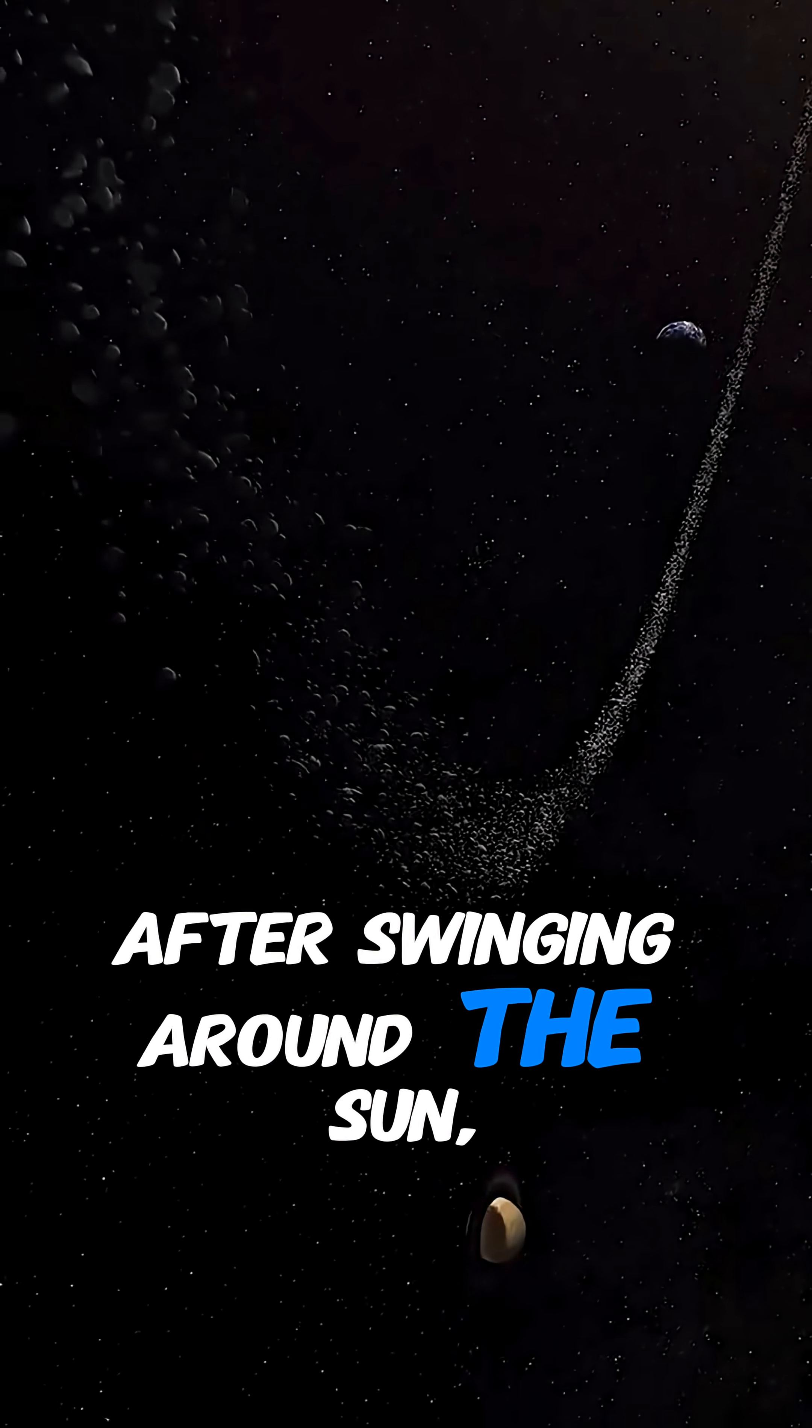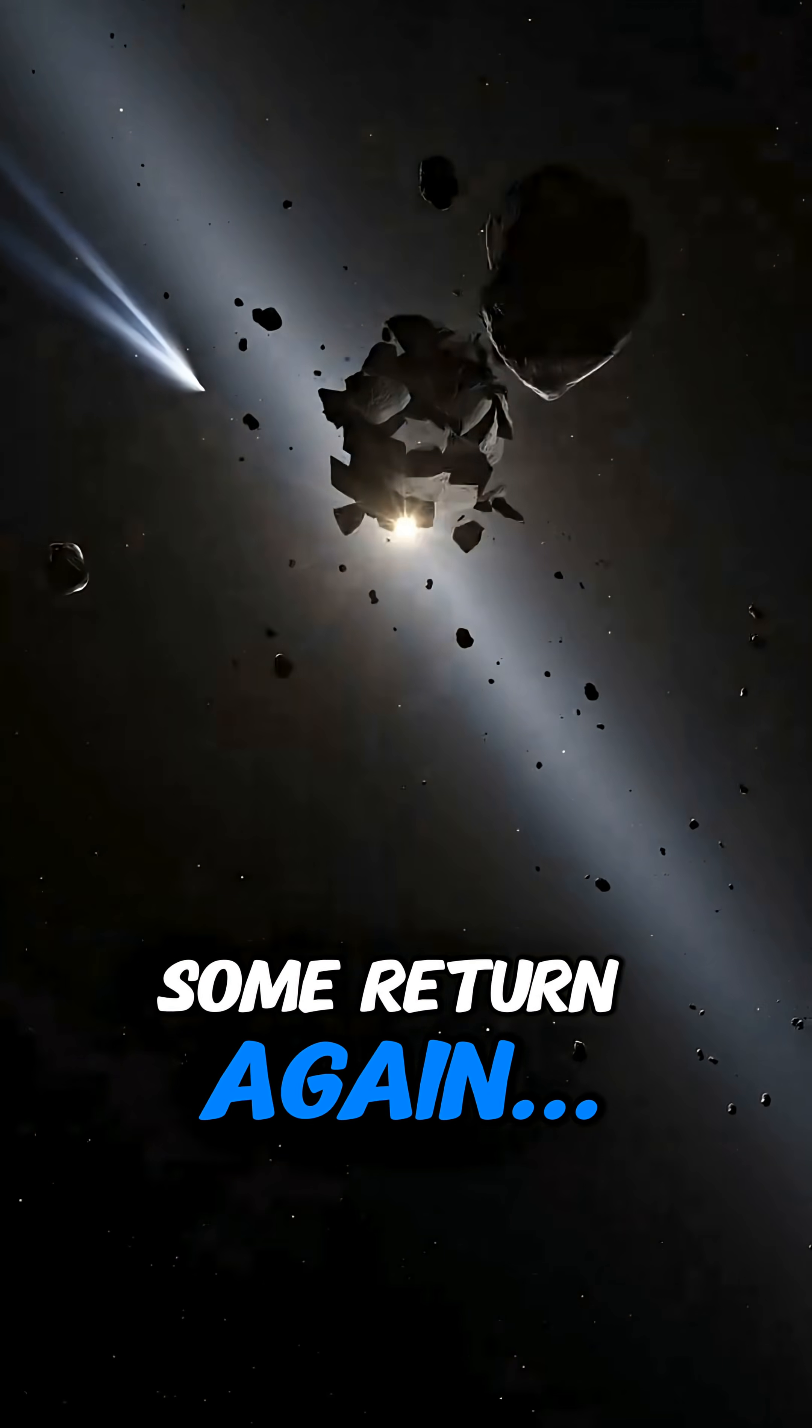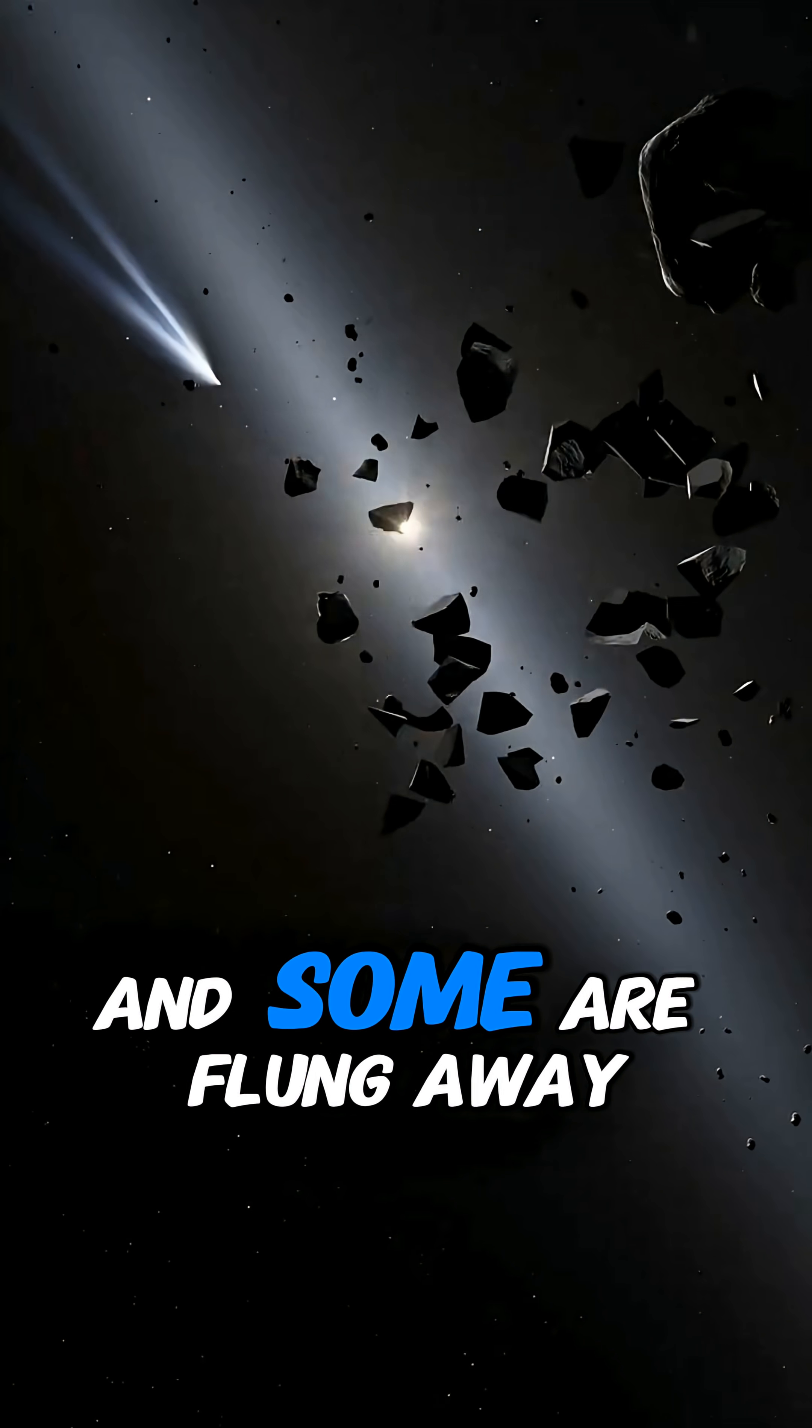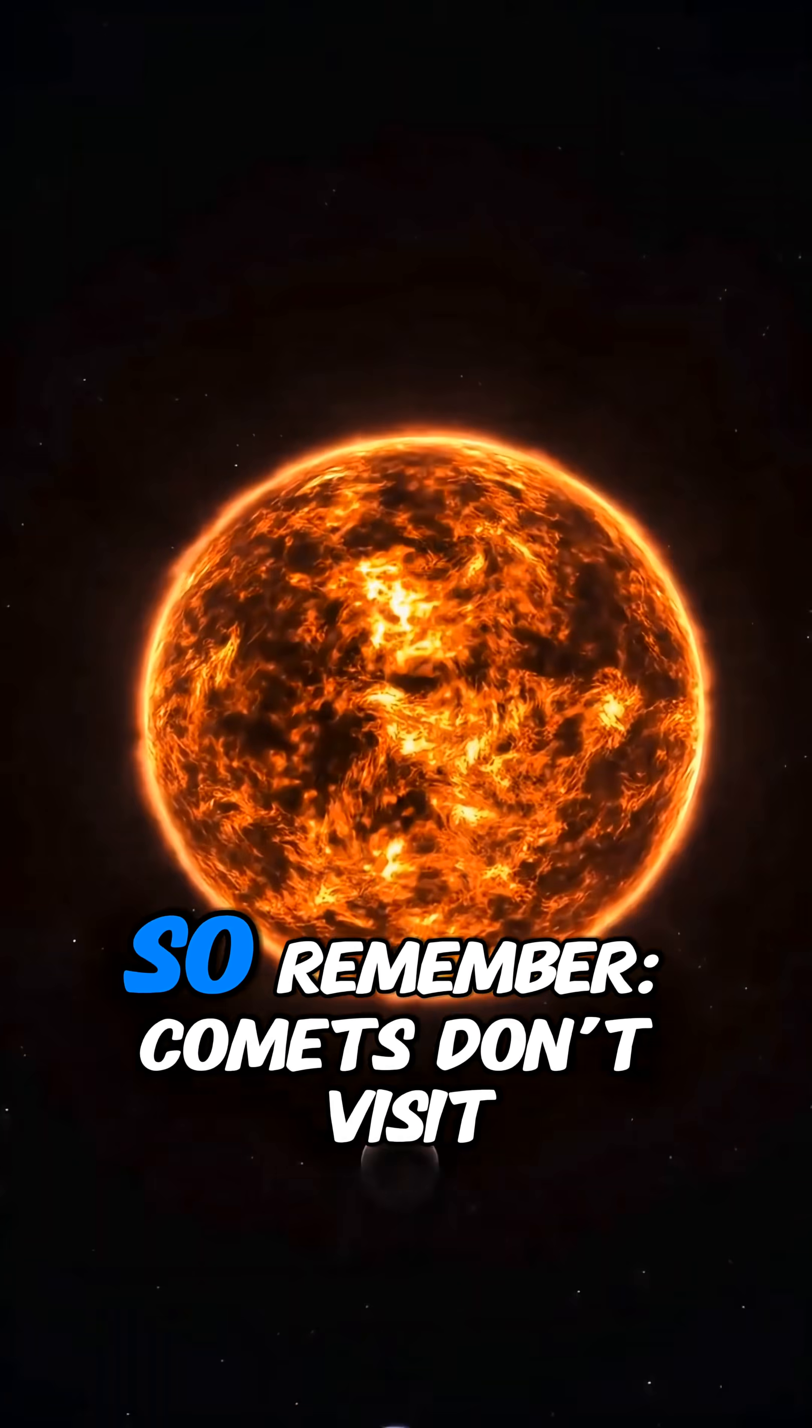After swinging around the Sun, the comet speeds up and flies back to the outer darkness. Some return again, some break apart, and some are flung away forever, escaping the solar system as rogue comets.